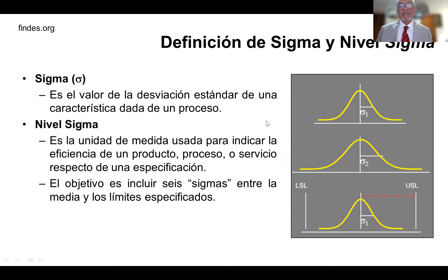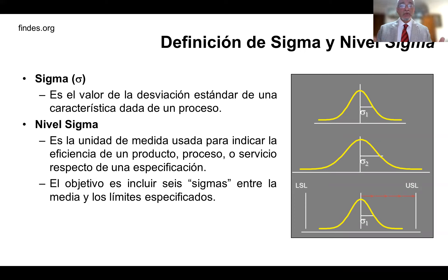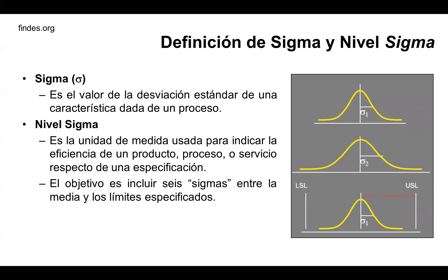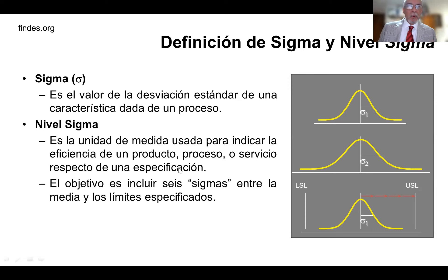Vamos a empezar con la definición de Sigma y el nivel Sigma. Sigma se refiere a la desviación estándar de una característica dada de cualquier proceso. Los procesos los podemos medir y a partir de la distribución, la curva de distribución normal, podemos determinar esa desviación. El nivel Sigma es la unidad de medida usada para indicar la eficiencia de un producto, proceso o servicio respecto a la especificación. Entre más sigmas, más controlado estará el proceso.